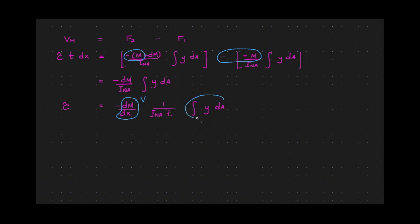The term integral y dA, that is what we call the first moment of area, and usually the notation is q. So therefore, the transverse shear stress formula, in terms of its absolute value, is equal to v times q over i of the neutral axis times t.